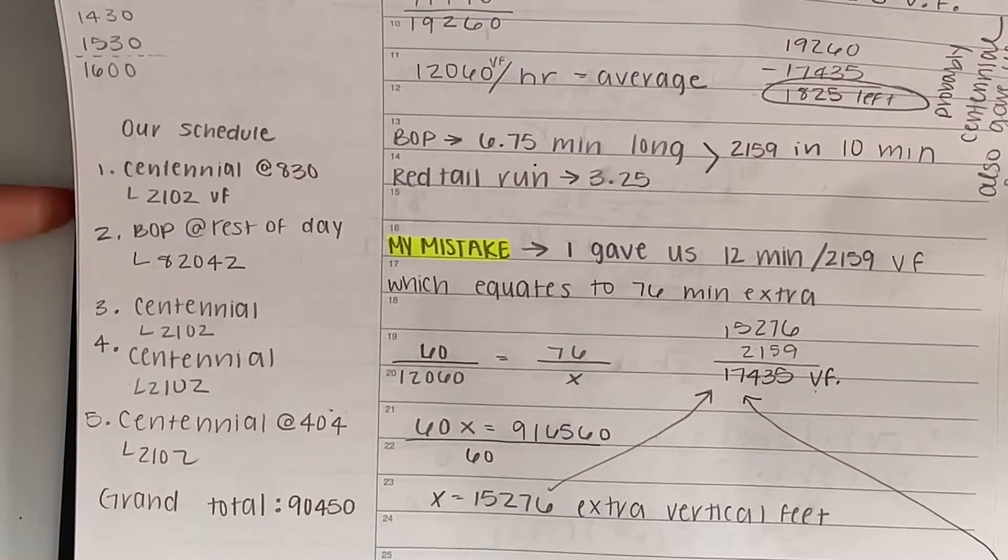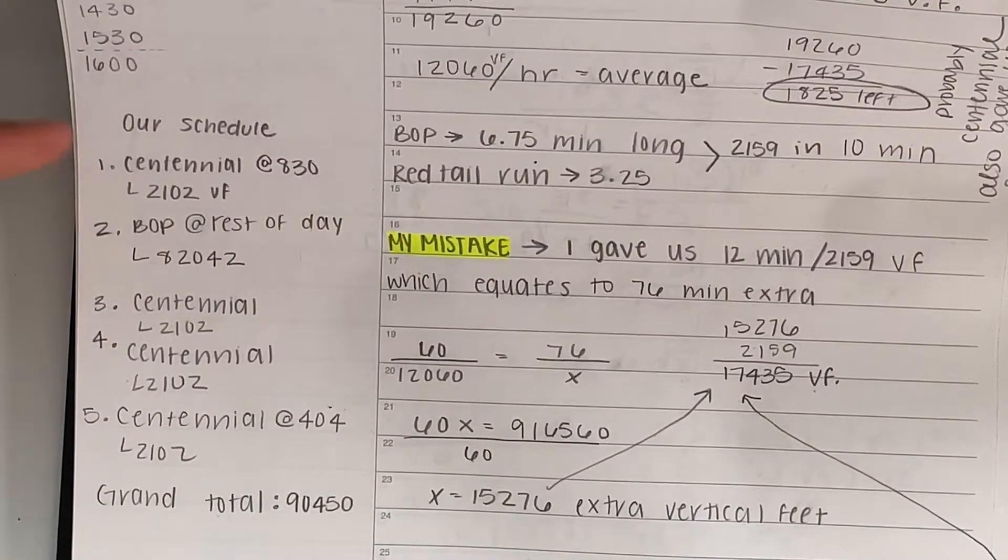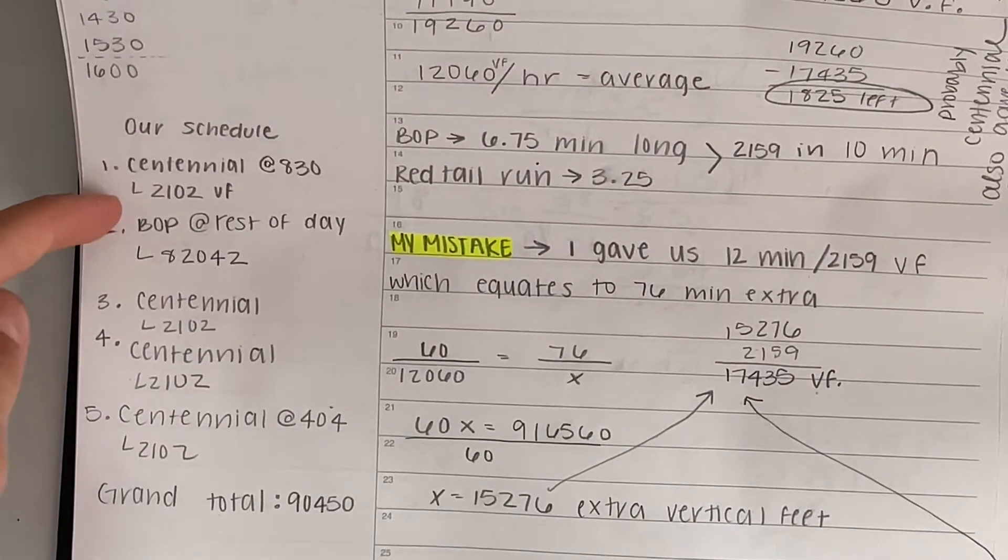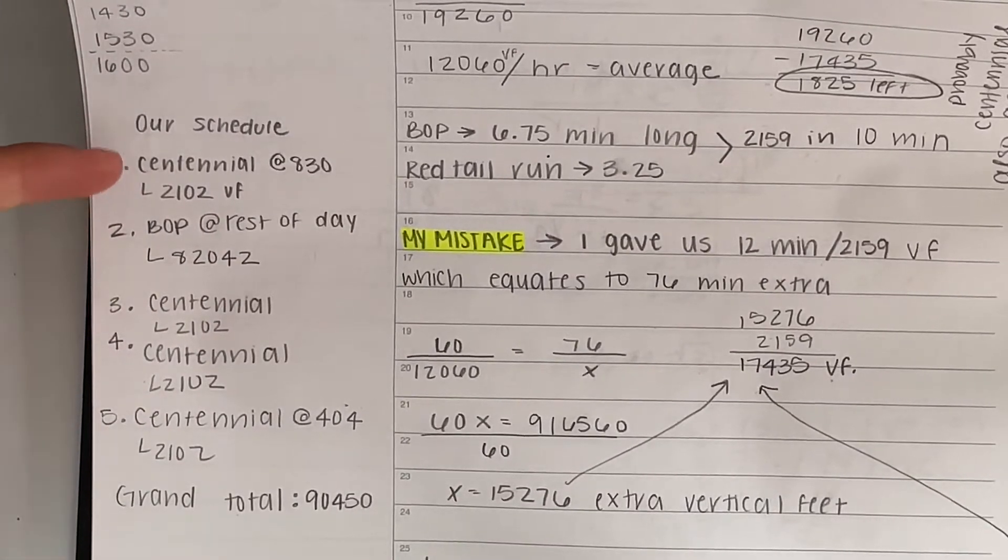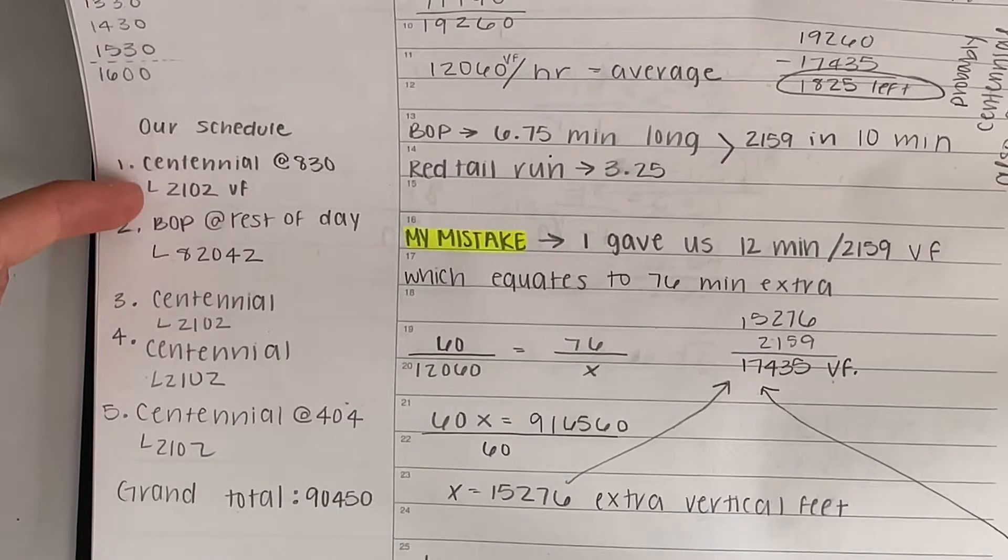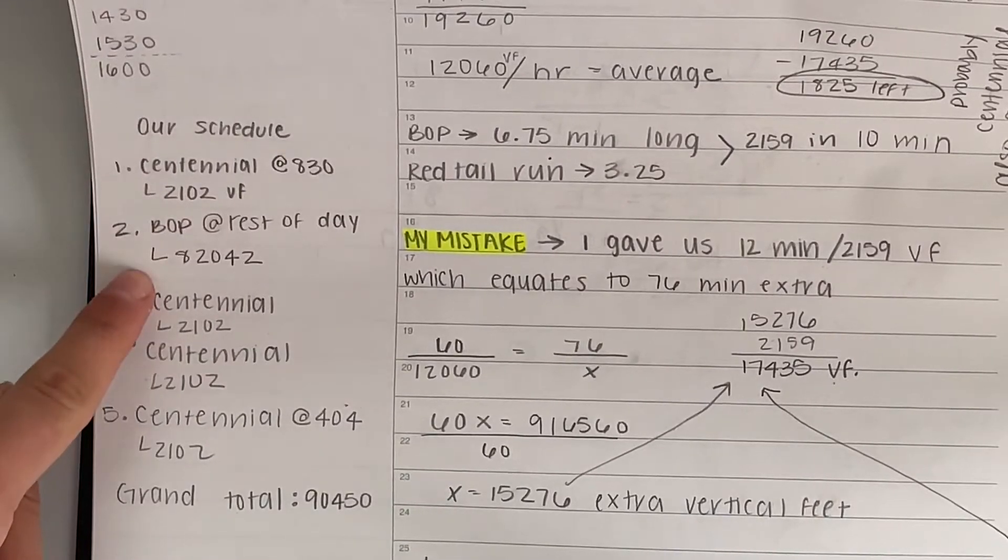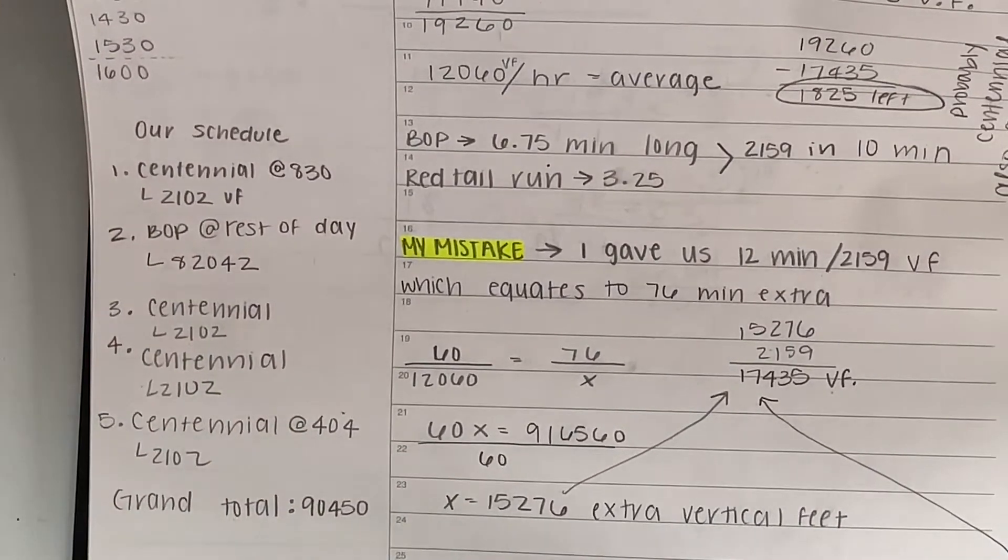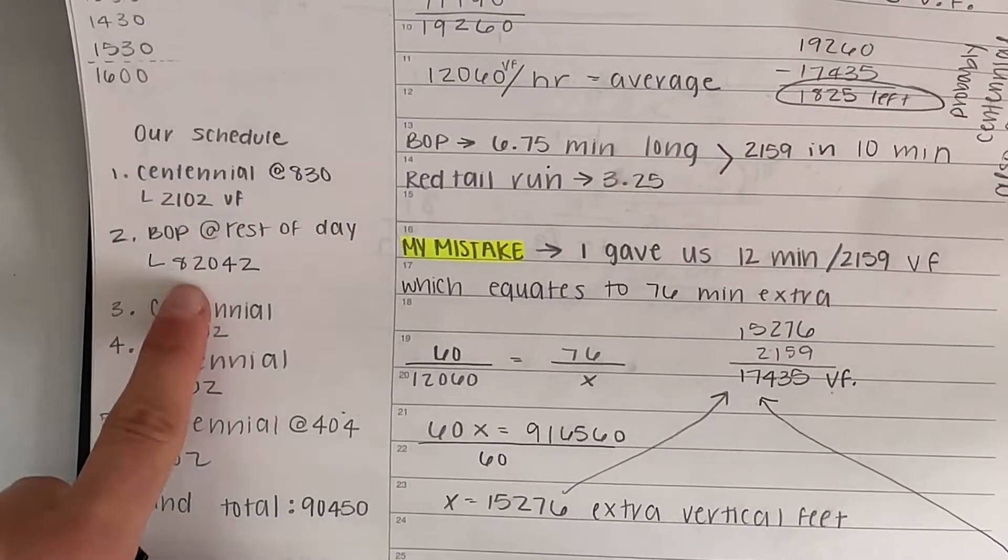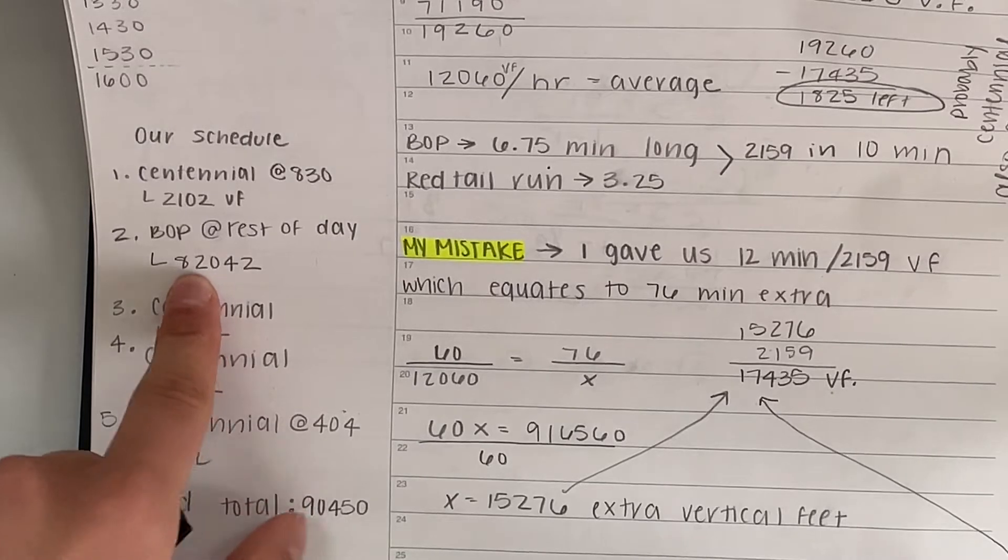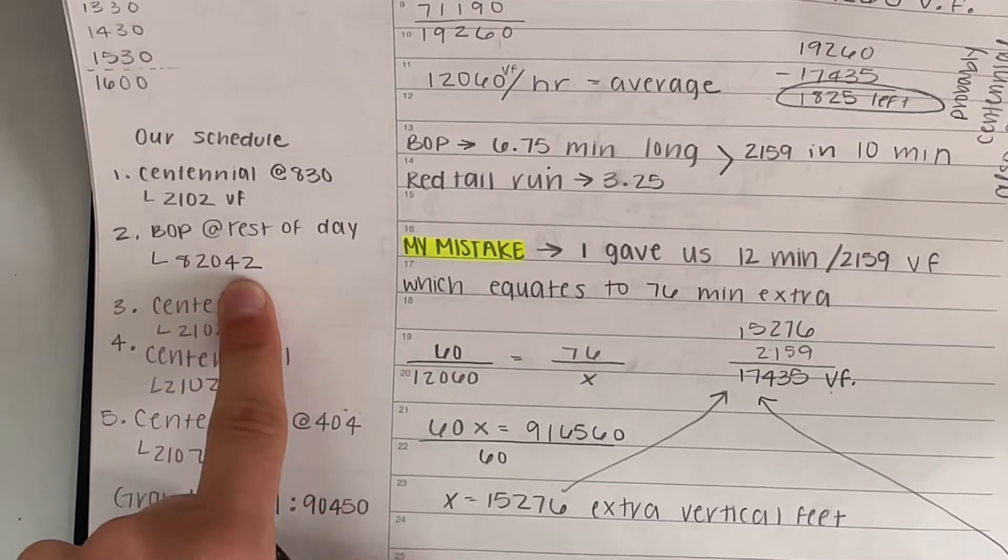So we took the lift called Centennial at 8:30 a.m. exactly. We were the first ones up. We were able to get 2,102 vertical feet with that one. Then we went on the next lift called Birds of Prey for the rest of the day. We actually did that 38 times. Now that's a total of 82,042 vertical feet.